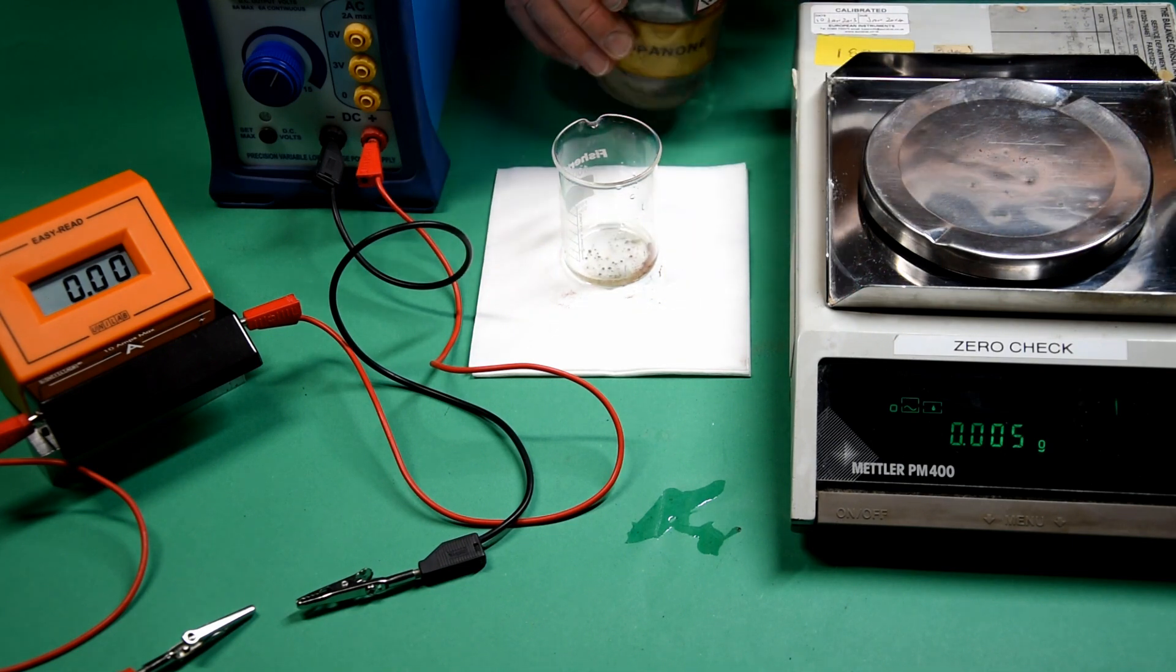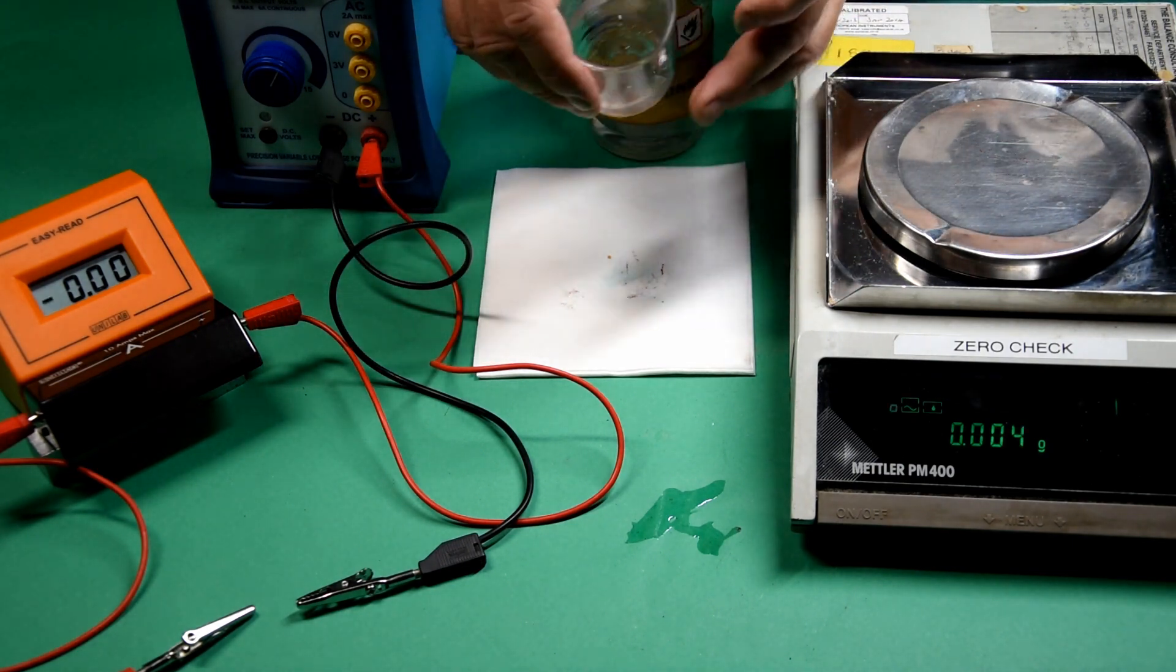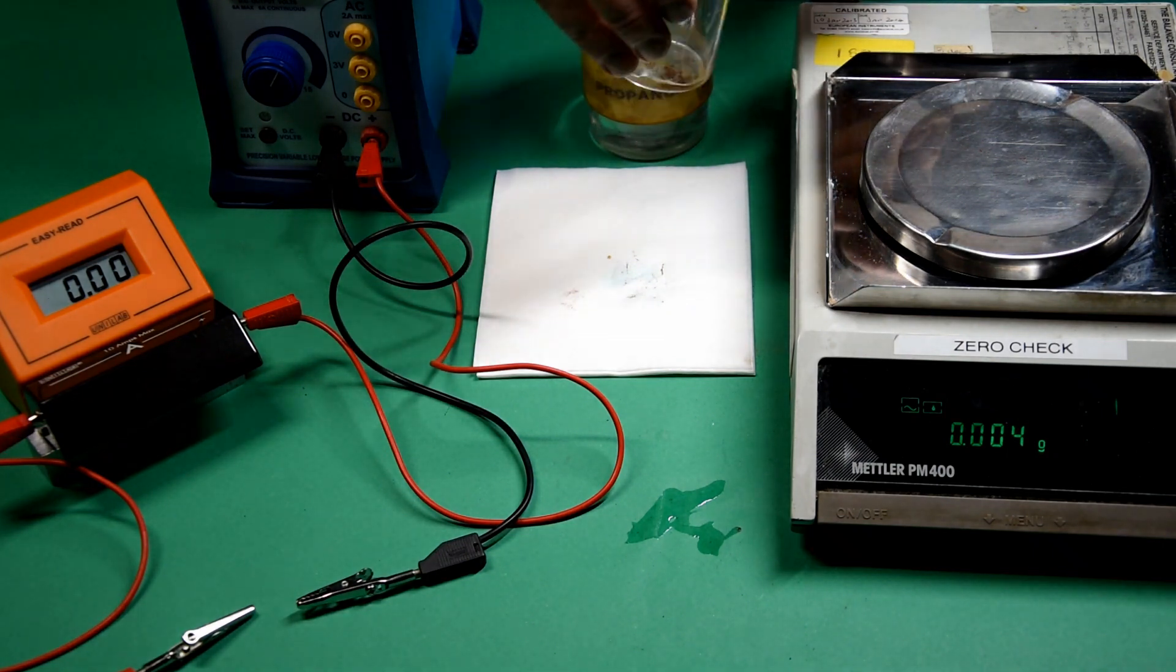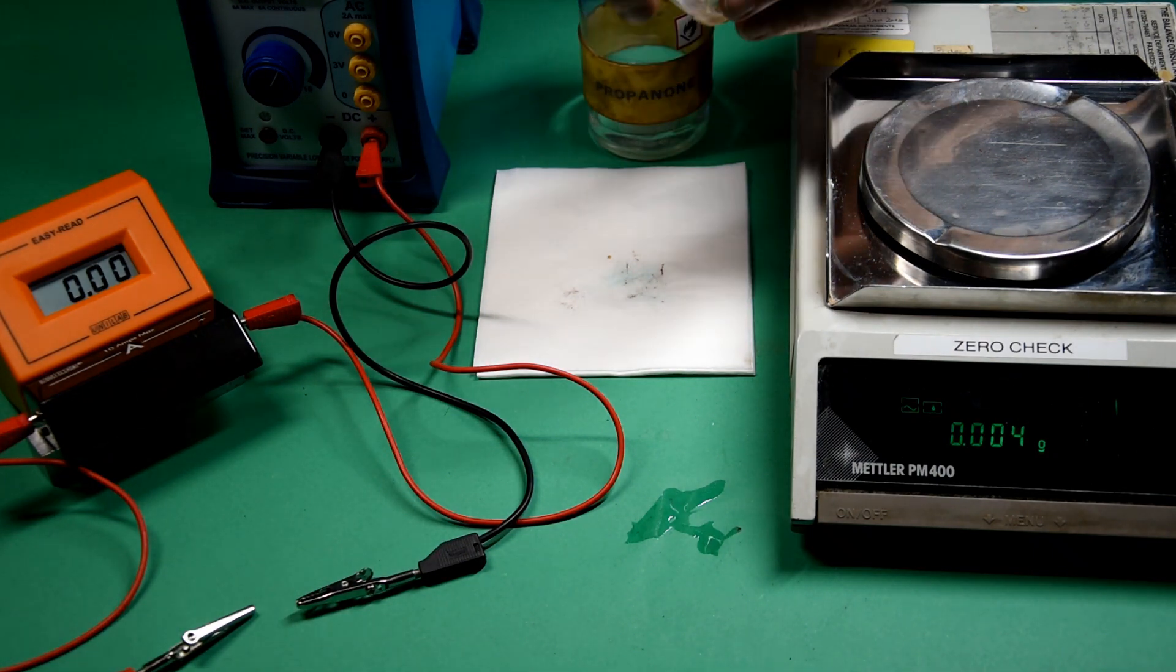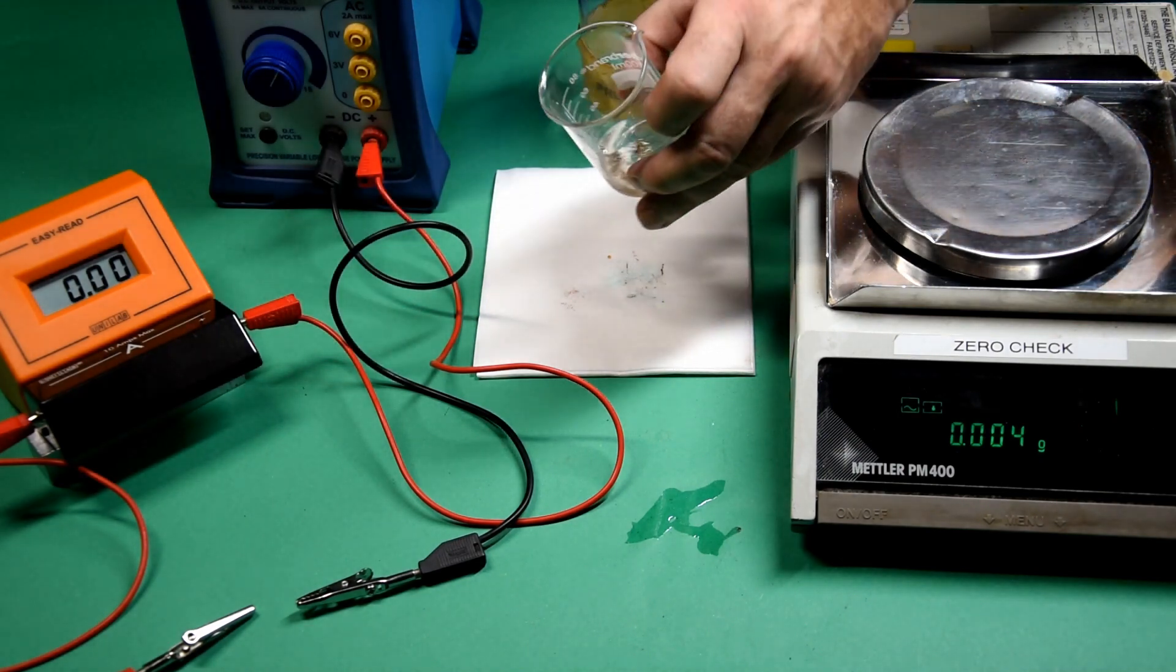Unfortunately, there's rather a lot of sludge left at the bottom of the beaker. Most of this sludge will be copper, but there may be some impurities as well. We're using the propanone to dry the sludge, to get it out of the beaker and to dry it.